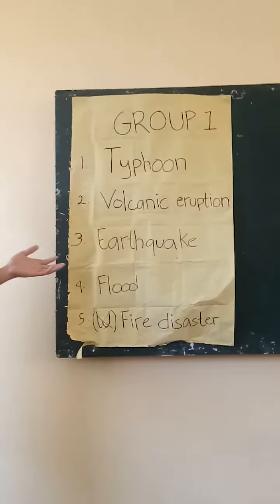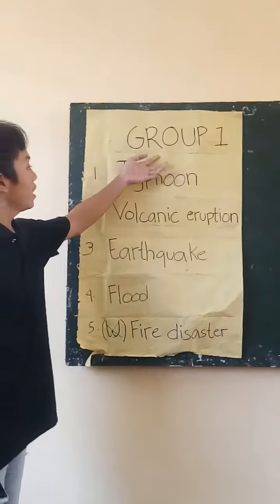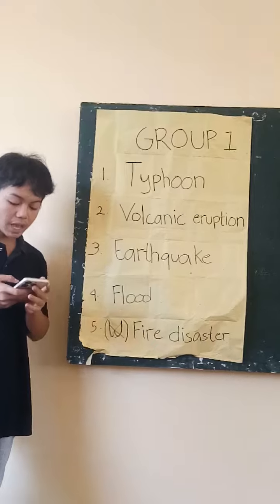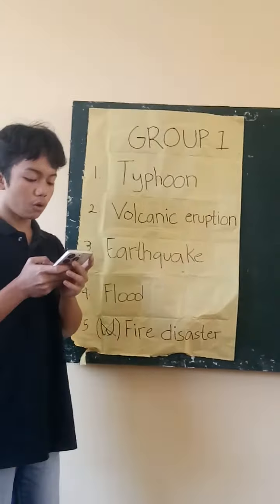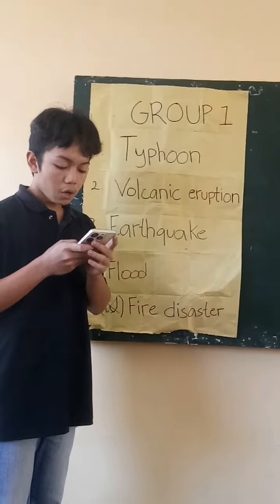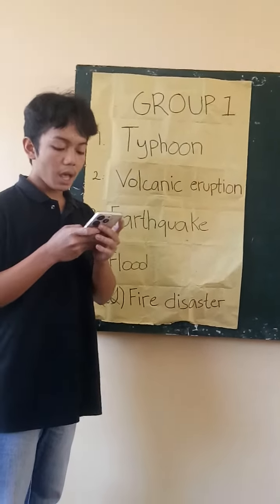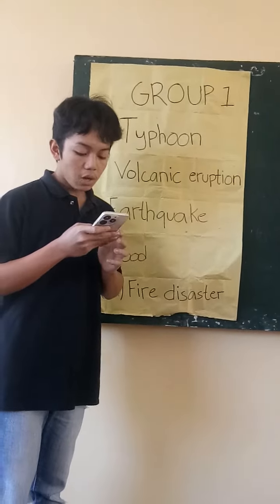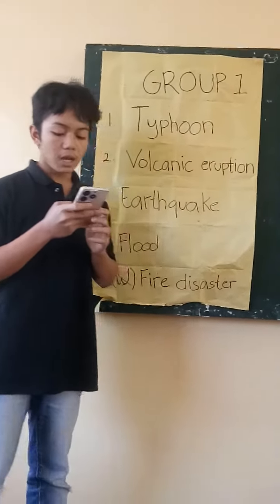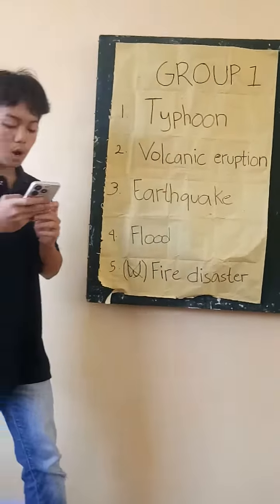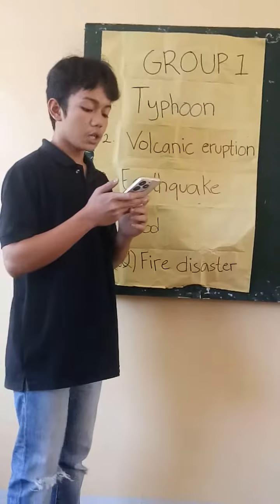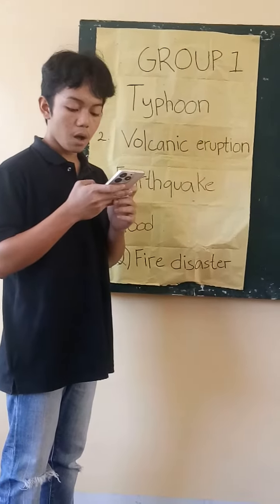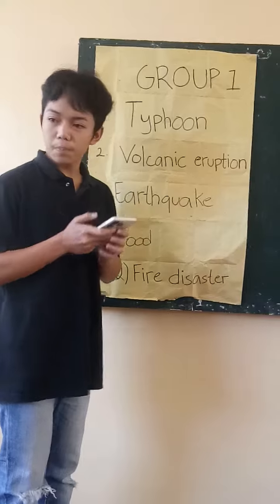This is drop one. Number one is typhoon. Tropical typhoon, also called typhoon, are intense circular storms organized over tropical oceans. It is characterized by the atmosphere,